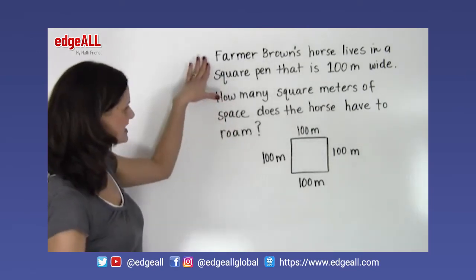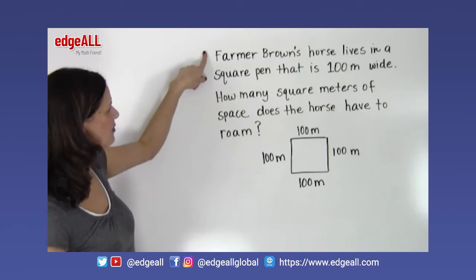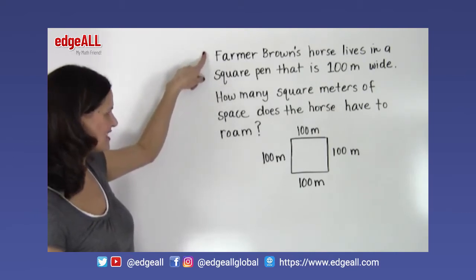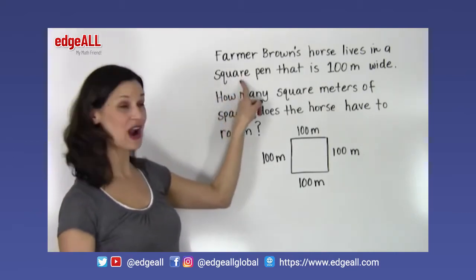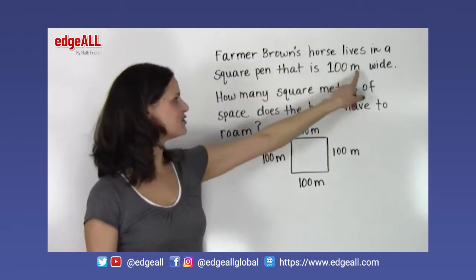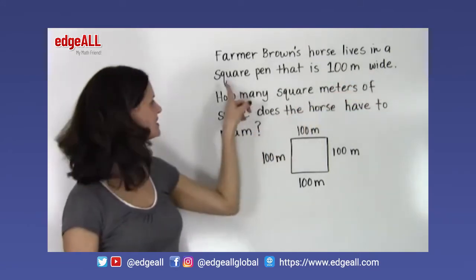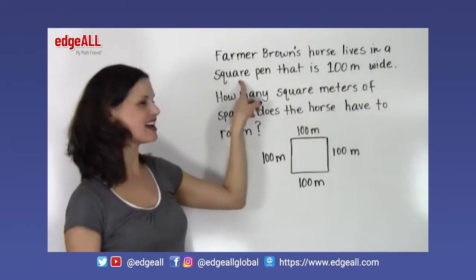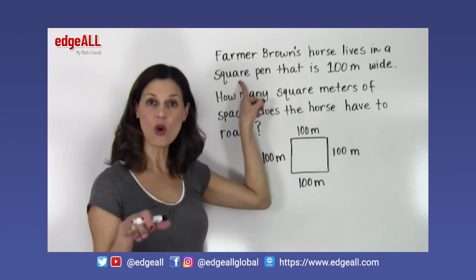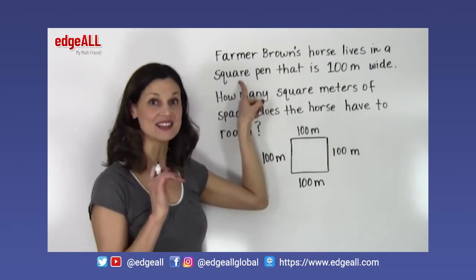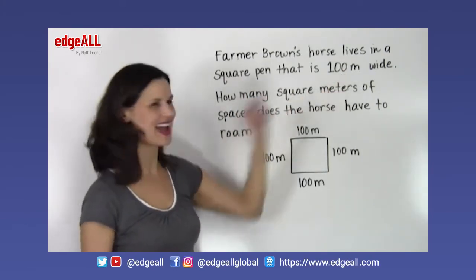Let's take a look at an example of finding the area of a square. Our problem tells us that Farmer Brown's horse lives in a square pen that is 100 meters wide. Since it's a square, we know that all four sides are equal — 100 meters each.